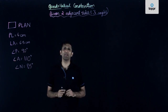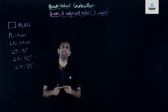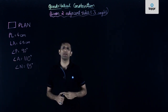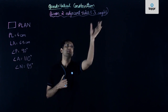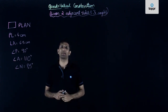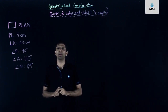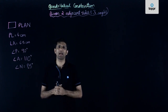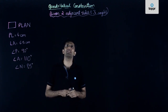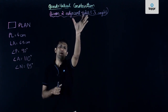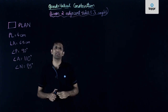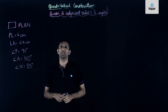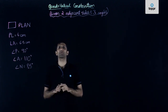Let us now see an example in which we have been given two adjacent sides of a quadrilateral and also given the measures of three angles of that quadrilateral. Here, instead of the dimensions of the sides or the diagonals, we have been given dimensions of only two adjacent sides and measure of three angles. So let's try to solve this question.